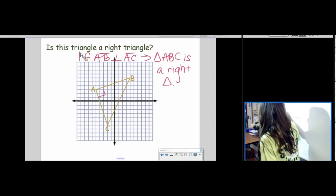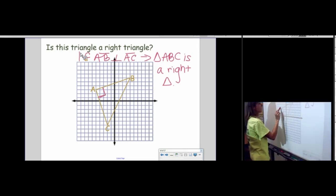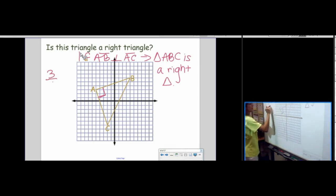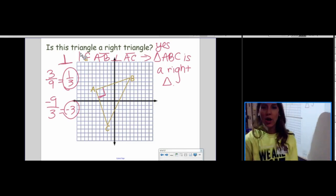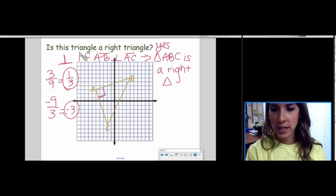So, from A to B, rise 1, 2, 3. 1, 2, 3, 4, 5, 6, 7, 8, 9. Rise 3. Run 9. 1, 2, 3, 4, 5, 6, 7, 8, 9. Run backwards. 1, 2, 3. Whoo-hoo! It is a right triangle because our slope of our legs were opposite reciprocals.